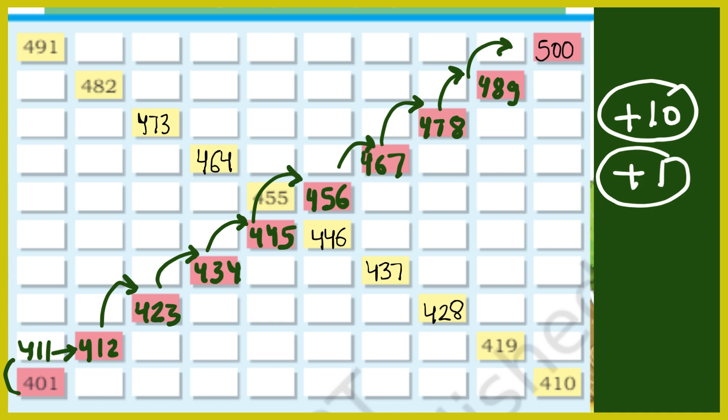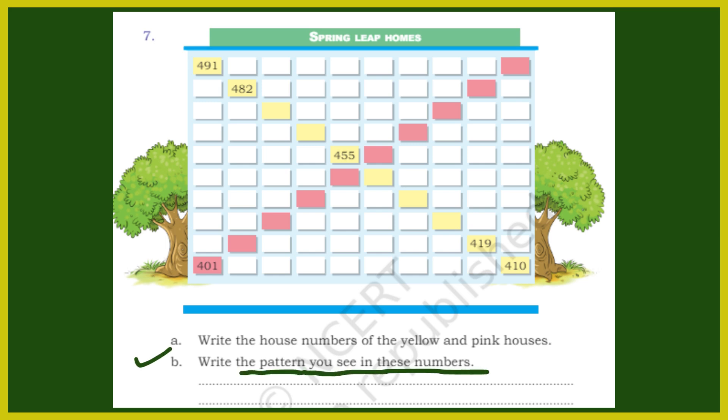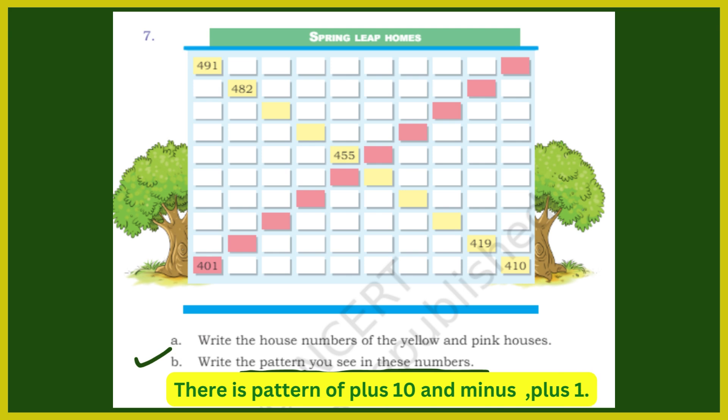I hope you understand how to fill these numbers. Now write the pattern you see in these numbers. So, we have seen what pattern — there is a pattern of plus 10 going upward, and minus 1 or plus 1 going left or right. We have done plus 10 in each number going up, and then if we go right side then plus 1, and left side then minus 1. This is the pattern.